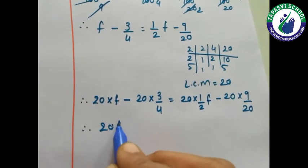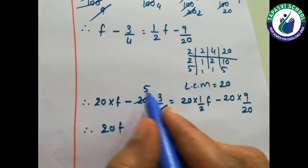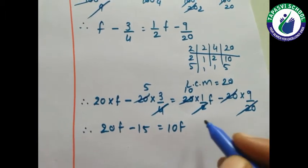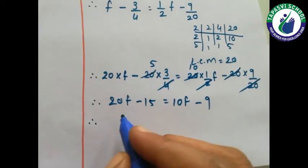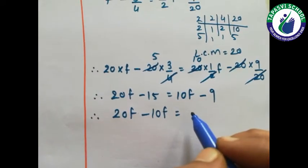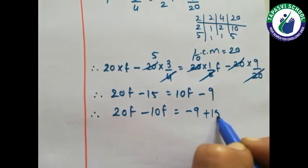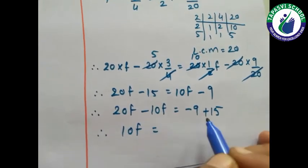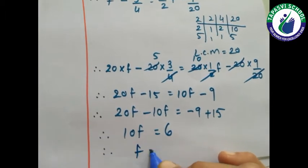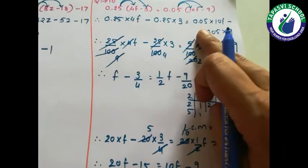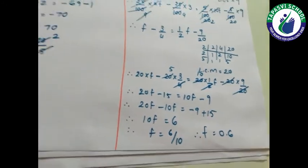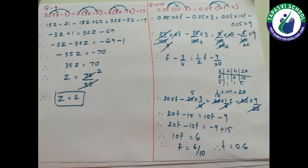It will become 20f. 4 fives are 20, so 5 threes are 15. 2 tens are 20, so it becomes 10f. 20 and 20 cancel, so it becomes minus 9. Now one side variable term, one side constant term: 20f minus 10f is 10f. 15 minus 9 is 6. Here f equals 6 upon 10. Our question was in decimal, we converted it to fraction, now we convert back to decimal: so f equals 0.6. This is how we simplify the given equation.